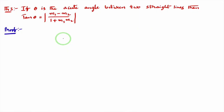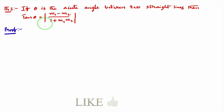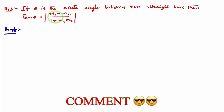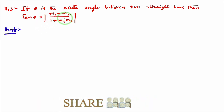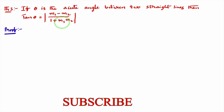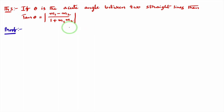Hello friends, I am Balaji Rao. Welcome to BRMAX class. We are going to prove this theorem: if theta is the acute angle between two straight lines, then tan theta equals the modulus of m1 minus m2 divided by 1 plus m1 into m2.